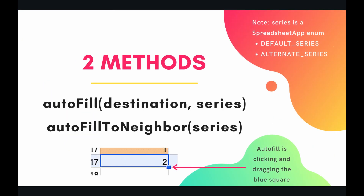As I was making the last episode, it occurred to me that a lot of the things you could do with copyTo with ranges, you can also do with another method called autofill. There's also a second method called autofillToNeighbor — they do almost the same exact thing. Autofill is basically you clicking and dragging that blue little square at the bottom right-hand corner of the cell.